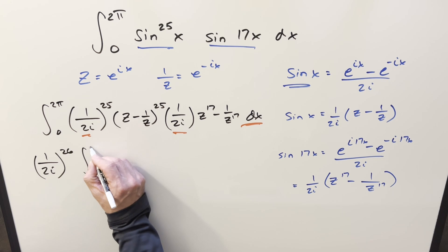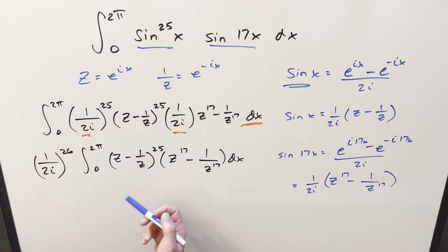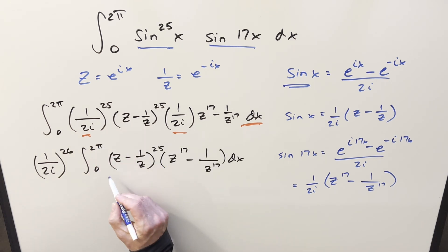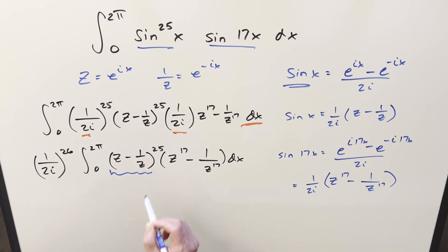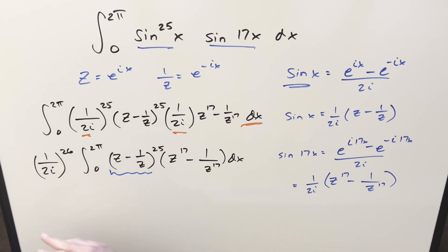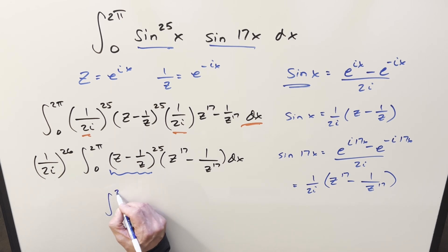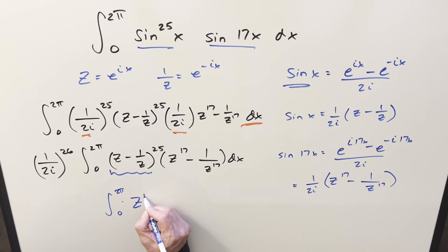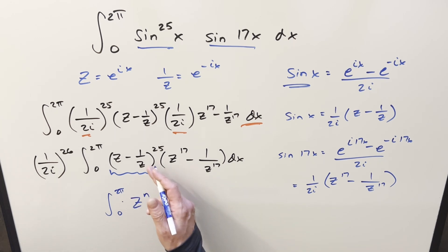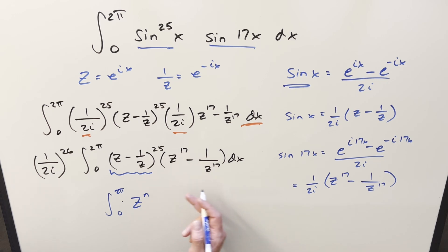We don't want to multiply everything all the way out, but we can use binomial expansion on the (z − 1/z)^25 piece. Before we do that, the thing to recognize is: just imagining we expand it all out, we get a ton of terms — maybe around 50 terms. But remember, we're integrating from 0 to 2π. So let's think about what happens with a general term z^n, where n could be anything up to around 42, negative, or 0.